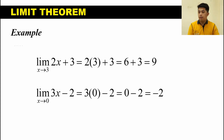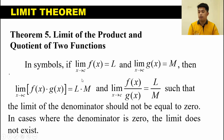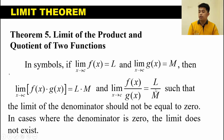Let's move on to limit theorem number 5, the limit of the product and quotient of two functions. This states that the limit of a product or quotient of two functions is simply the product or quotient of the limits of the individual functions. If the limit of F of X as X approaches C equals L and the limit of G of X as X approaches C equals M, then the limit of F of X times G of X as X approaches C equals L times M. The limit of F of X over G of X as X approaches C equals L over M, provided that M is not equal to 0. In cases where the denominator is 0, the limit does not exist.